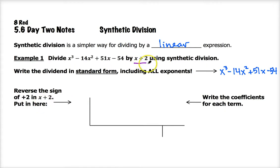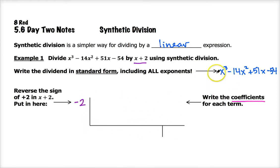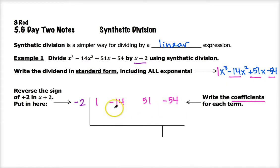I'm going to think: if x plus 2 is a factor of this polynomial, what would one of the zeros be? You set x plus 2 equal to zero and solve — you get negative 2 as one of the x-intercepts or zeros. So we're going to put negative 2 here. Then I'm going to take all of the coefficients of the dividend and place them along the top row inside this inverted division house. My coefficients are 1 on x cubed, then negative 14 on x squared, then positive 51, and then negative 54. I'm not putting the variables or exponents — just the coefficients.